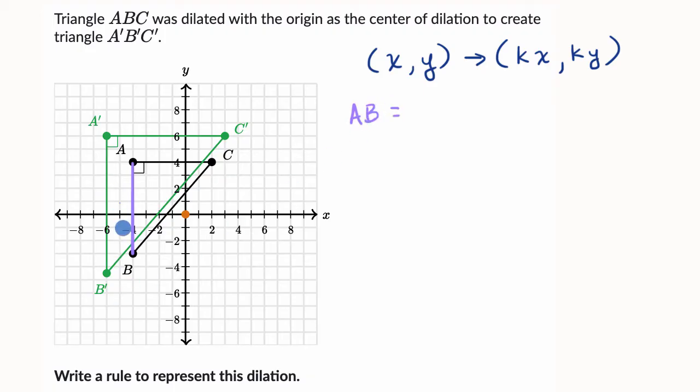AB is equal to, we can count the units, one, two, three, four, five, six, seven units long. And now let's look at the corresponding side on A prime, B prime, C prime. So A prime, B prime is equal to, what's that length going to be?